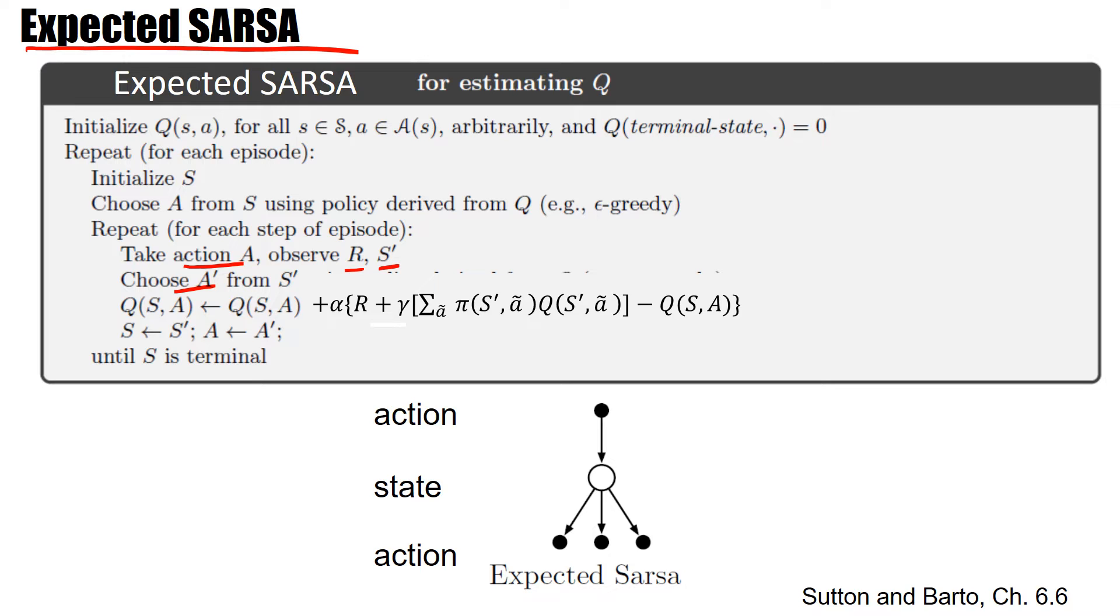And now we do it differently. We say, once I'm in this state S', I know that my policy would allow to pick different actions. And why should I use one for the update? I imagine that I give a relative weighting of the different possible next actions according to my policy.